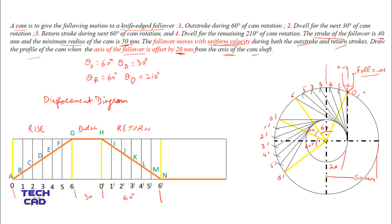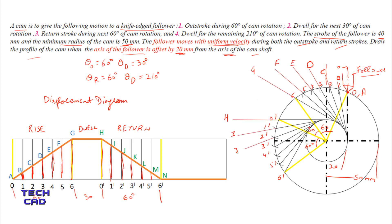Now locate the alphabet points on the corresponding tangent lines. Point 0 and point A coincide since there is no distance. For point 1 to B, measure the distance from the displacement diagram and mark it along tangent line 1. Similarly, measure and mark 2 to C, 3 to D, and all remaining points along their respective tangent lines in the same manner.